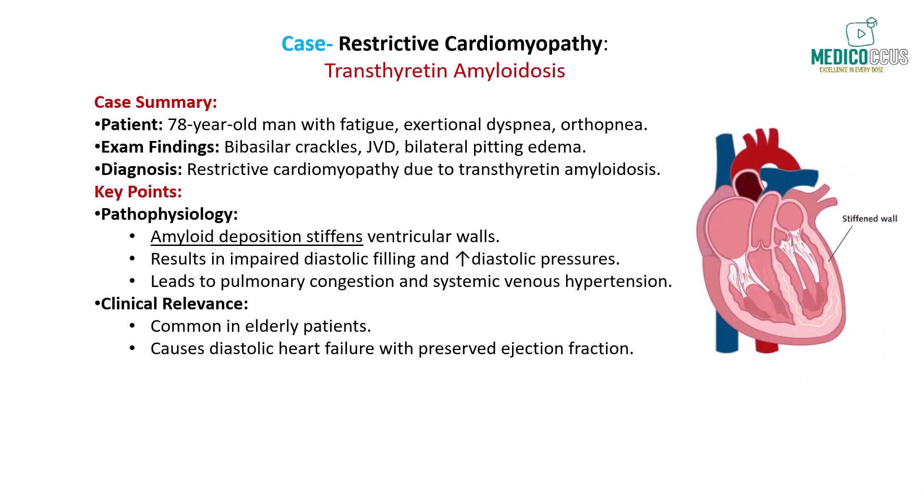Moving on to a different type of cardiomyopathy, consider a 78-year-old man presenting with progressive fatigue, exertional dyspnea, and orthopnea. On examination, he has bibasilar crackles, elevated jugular venous pressure, and bilateral lower extremity pitting edema. His left ventricular diastolic pressure-volume curve shows elevated pressures, indicative of reduced ventricular compliance. The most likely diagnosis is restrictive cardiomyopathy due to transthyretin amyloidosis. In this condition, amyloid proteins deposit within the myocardial tissue, leading to stiffened ventricular walls that impair diastolic filling. The increased diastolic pressures result in pulmonary congestion and systemic venous hypertension, manifesting as heart failure symptoms.